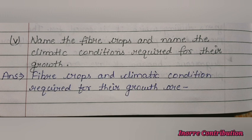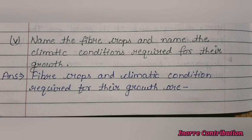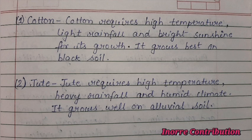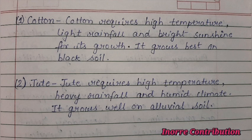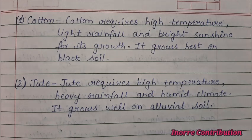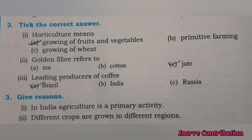Next question: Name the fiber crops and the climatic conditions required for their growth. First, cotton — cotton requires high temperature, light rainfall, and bright sunshine for its growth; it grows best on black soil. Second, jute — jute requires high temperature, heavy rainfall, and humid climate; it grows well on alluvial soil.